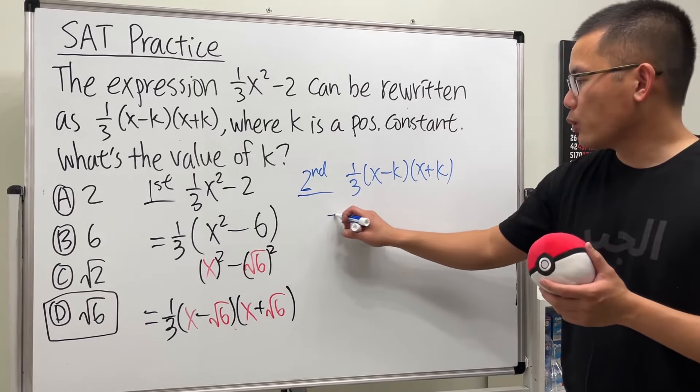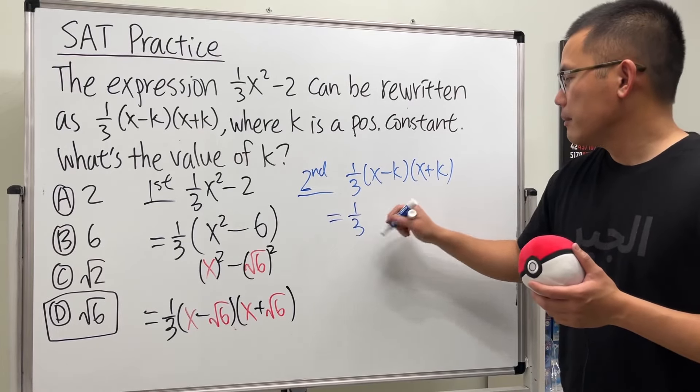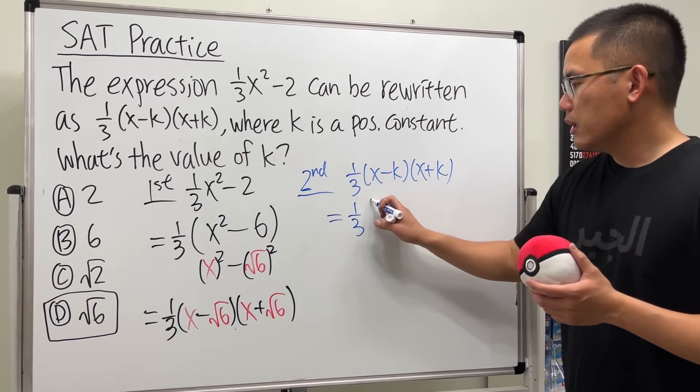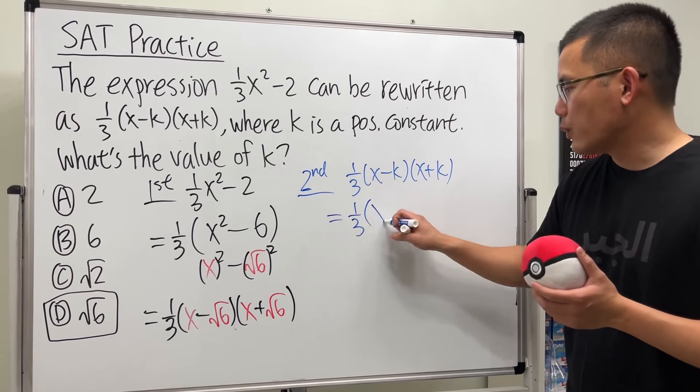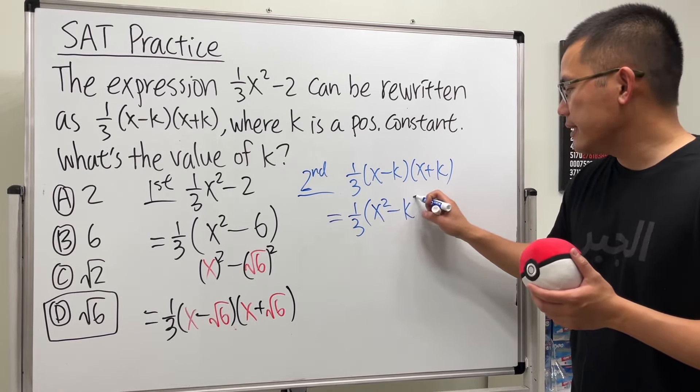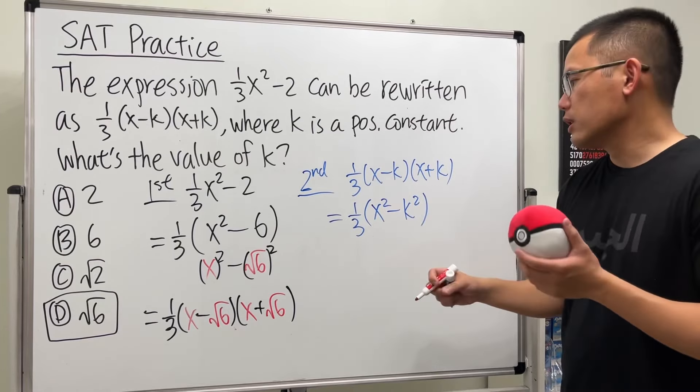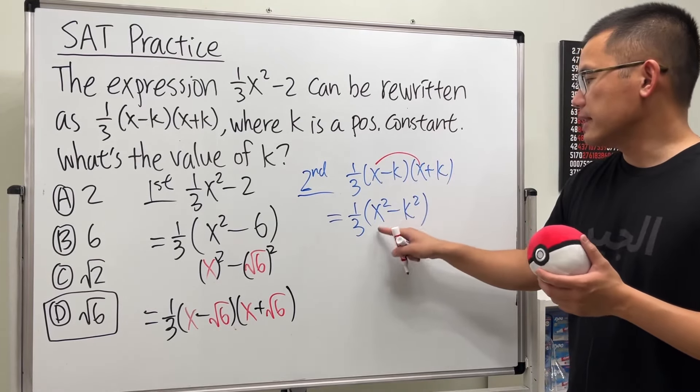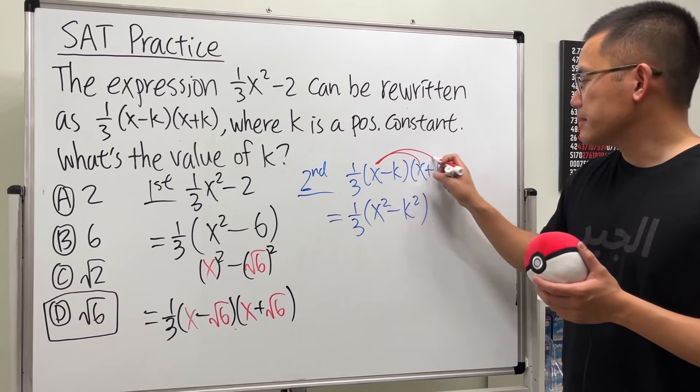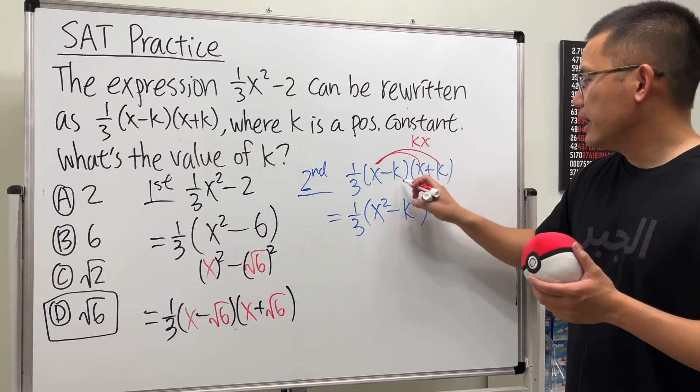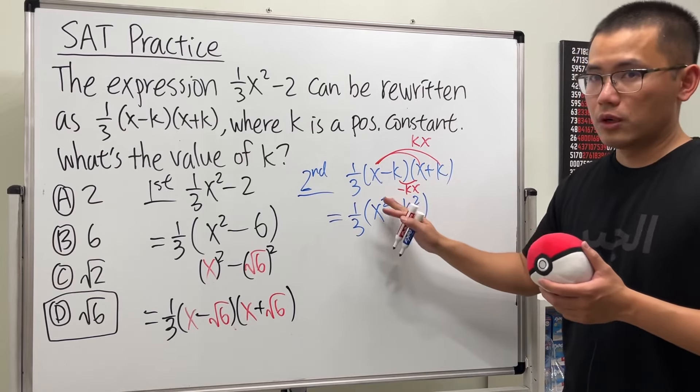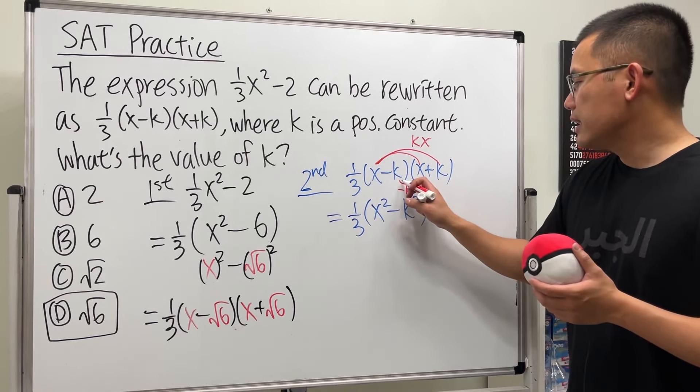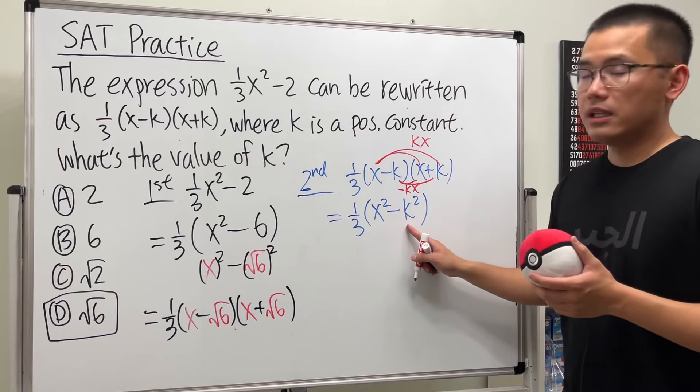I'm going to keep the 1/3 in the front. But we are going to multiply this out. And the truth is, this is just the difference of 2 squares formula. We will end up with x² - k². You can also multiply this out: x times x is x², and then x times k is kx, but here this term is negative kx. So the middle term is 0. And lastly, negative k times k is negative k².